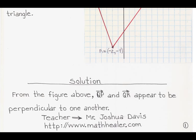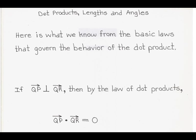Here is what we know from the basic laws that govern the behavior of the dot product: if vector QP is perpendicular to vector QR, then by the law of dot products, the dot product of vector QP with vector QR is equal to zero. So again, if two vectors are perpendicular, when we take the dot product, the result should be equal to zero.